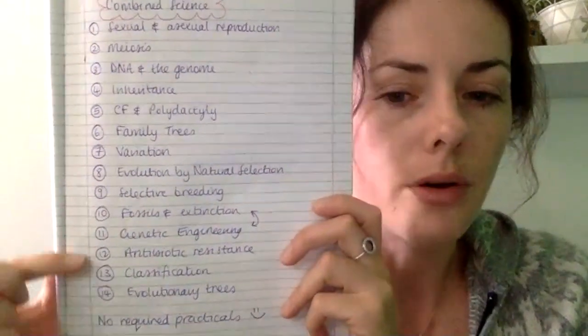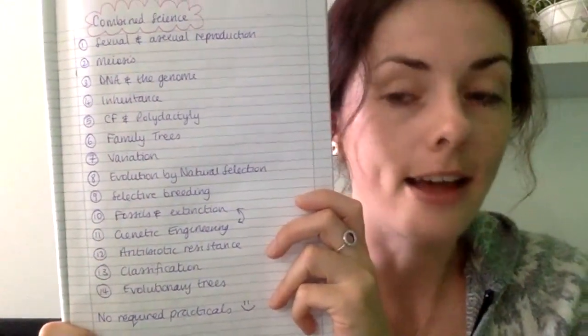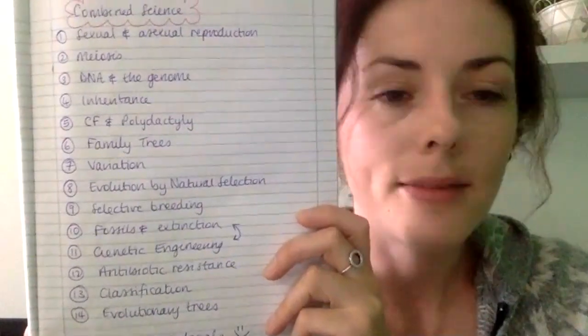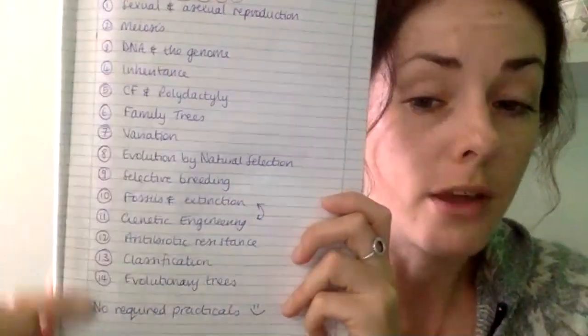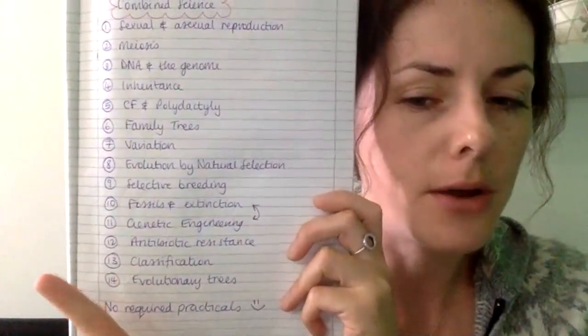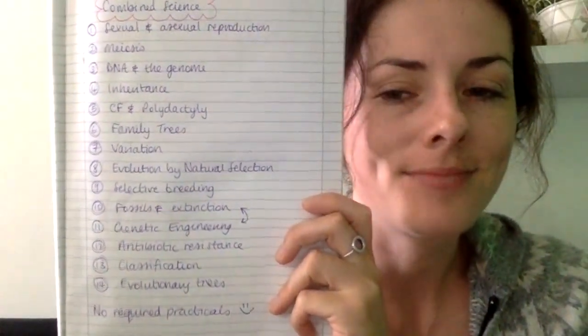Alice requested we go over genetic engineering, so I'll start with that. There are two parts to it. The first is why do we do it? The main reason is to create genetically modified crops, or GM crops. There are four big benefits of these types of crops that you need to know.